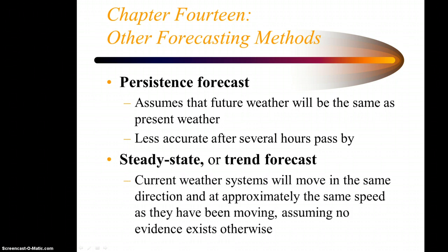Then there's a steady state or trend forecast, which basically says that current weather systems will move in the same direction and at approximately the same speed as they have been moving, assuming no evidence exists otherwise. Those can also be dangerous down the road because if you're not looking at the evidence, it could be that a weather system may move and, of course, that'll blow your forecast.